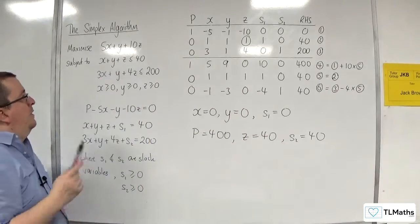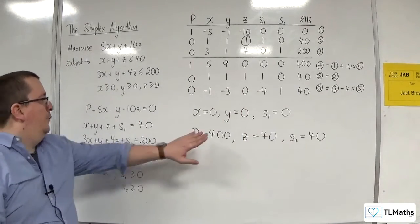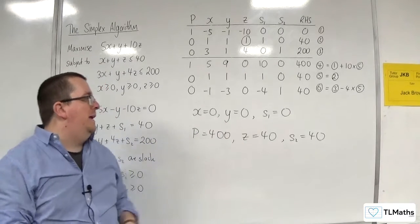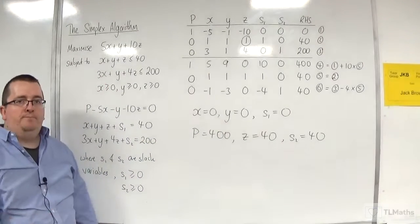OK. So the maximum value of P is 400, and that occurs when x is 0, y is 0, and z is 40.